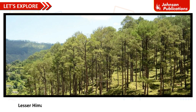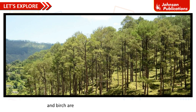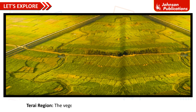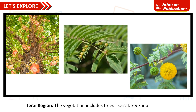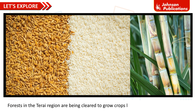In the Lesser Himalayas, thick forests of pine, oak, fir, spruce, walnut, poplar, cypress, and birch form the natural vegetation. The vegetation also includes trees like sal, keekar, and babul. Forests in the Terai region are being cleared to grow crops like wheat, rice, and sugarcane.